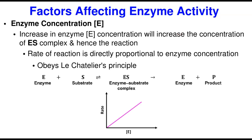Increase in enzyme concentration [E] will increase the concentration of the enzyme-substrate complex. When we talked about the mechanism of enzyme, we said it is crucial that the enzyme-substrate complex forms, because the formation of the enzyme-substrate complex is what we call the rate-limiting step for the formation of the product. If you form more of this, it's going to break down to release the product — which is the ultimate aim for an enzymatic reaction. So the increase in enzyme concentration will increase the concentration of the ES complex and hence will increase the rate of that reaction.